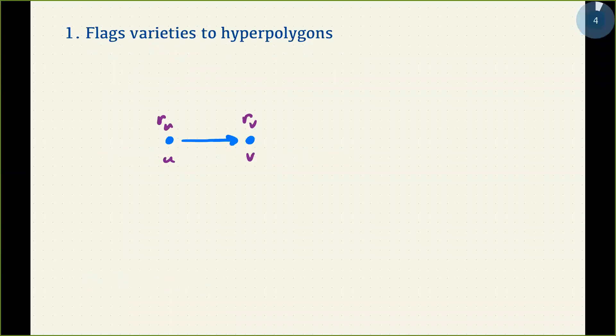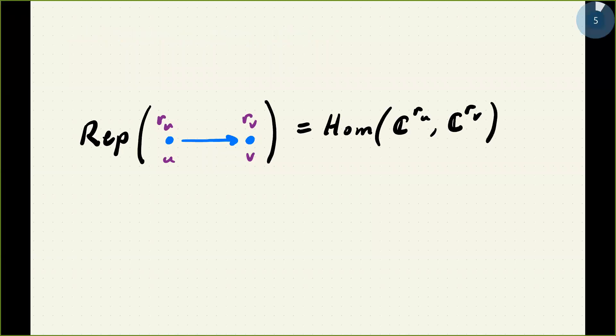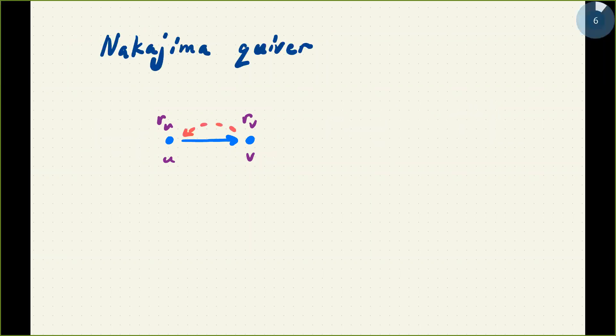Just to ensure we're on the same page, I want to start with some mechanics about quiver varieties. You can essentially understand the quiver variety by understanding just a single arrow in the diagram. Here I have an arrow pointing from one node to another—let's call those nodes u and v—and they're labeled by elements of a dimension vector, just as in Alex's talk. These are non-negative integers r_u and r_v, and once you have those labels you can define a representation of the arrow as linear maps from C^{r_u} to C^{r_v}.